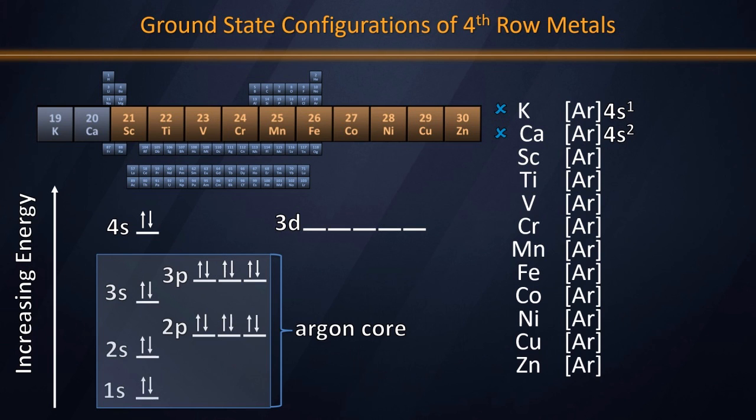But once we reach scandium, based on the Aufbau principle, we find 4S2, 3D1, and then moving forward we begin populating the D subshell. So these clearly are transition metals by the IUPAC definition, simply by virtue of the fact that their ground state electron configurations have unfilled D subshells.